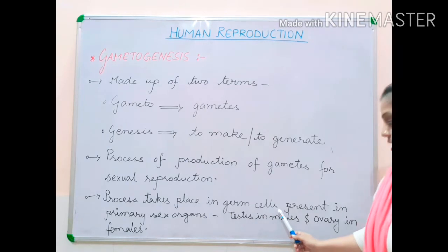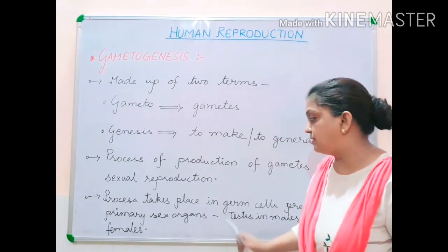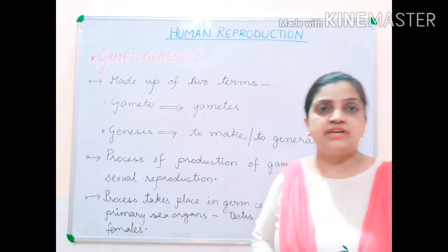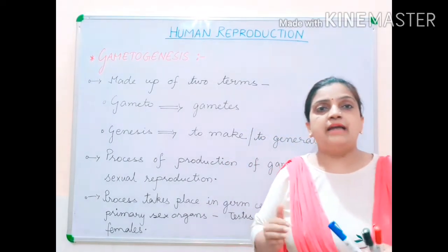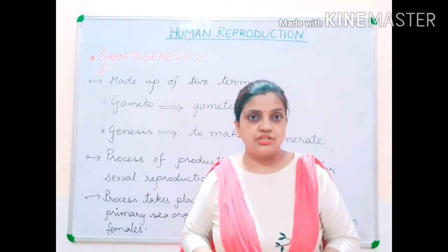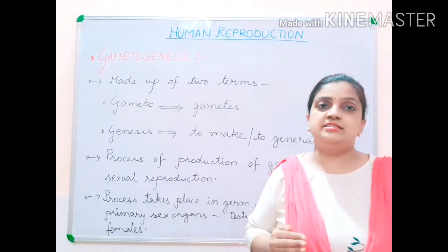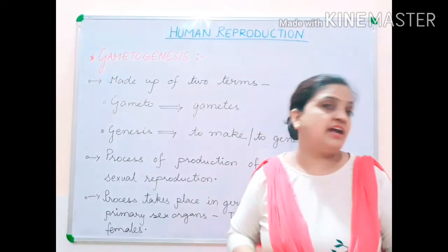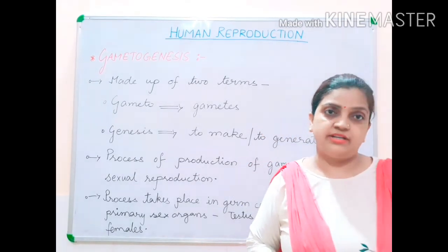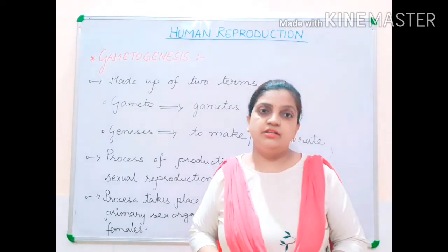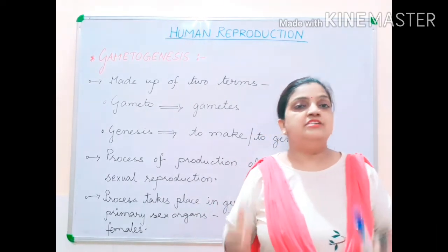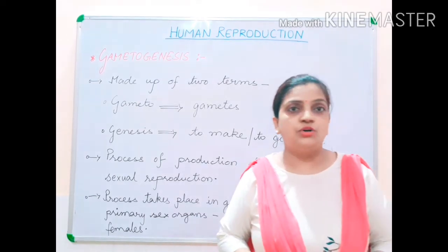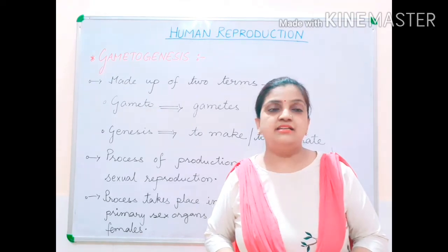This process takes place in germ cells present in primary sex organs — that is testes in males and ovary in females. All the gamete cells, or sex cells, are developed from germ cells located inside the primary sex organs. In males, testes is the primary sex organ; in females, ovary is the primary sex organ. These germ cells are responsible for the synthesis of gametes, also called sex cells, which are sperms and ovum.